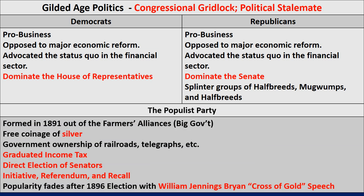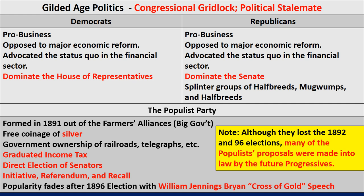This leads to the rise of the Populist Party, formed in 1891 out of the Farmers' Alliance. They wanted more government intervention, free coinage of silver, and bimetallism — one of the most successful third parties in US history. Their platform included government ownership of railroads and telegraphs, a graduated income tax, direct election of senators, and initiative, referendum, and recall. Their popularity faded after the 1896 election with William Jennings Bryan — think back to the famous Cross of Gold speech. Although they lost the 1892 and 1896 elections, many of these ideas, like the direct election of senators, would actually become law under the future progressives.